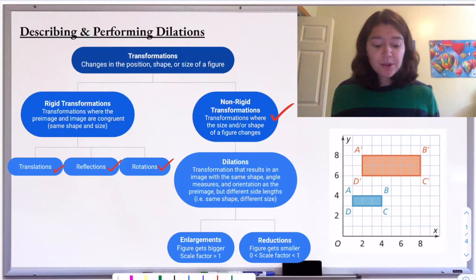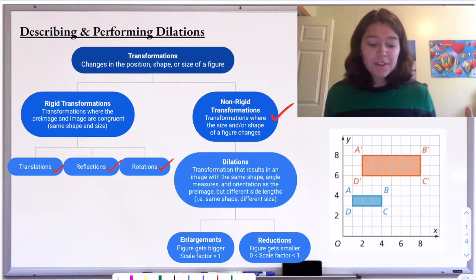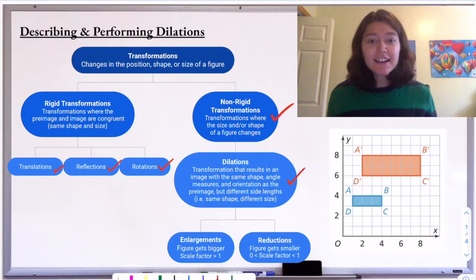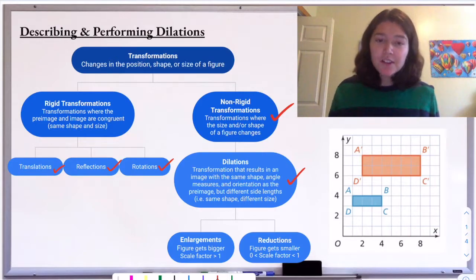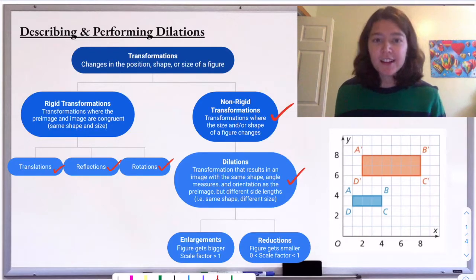Non-rigid transformations are transformations where the size and/or the shape of the figure changes. For us, we're really just going to be dealing with when the size of the figure changes. There are other types of non-rigid transformations, but in order to deal with them, you need a lot of higher algebra skills, so you won't see that until late high school.